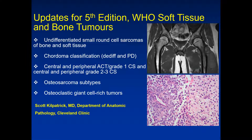First, there's a new category: undifferentiated small round cell sarcomas of bone and soft tissue. Second, the chordoma classification has changed — de-differentiated chordoma and poorly differentiated chordoma are now represented in their own categories. The atypical cartilaginous tumor/grade one chondrosarcoma concept has expanded with sections for both central and peripheral chondrosarcomas. There's been some consolidation of osteosarcoma subtypes, and the osteoclastic giant cell rich tumor category has changed. Additionally, the fifth edition now includes hematopoietic tumors such as Langerhans cell histiocytosis, Erdheim-Chester disease, and Rosai-Dorfman disease.